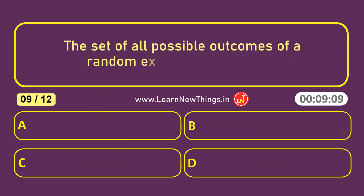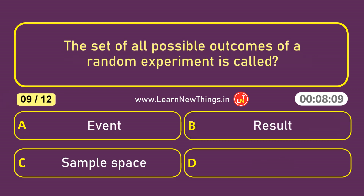The set of all possible outcomes of a random experiment is called the Sample Space.